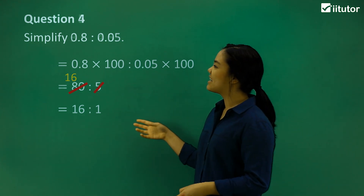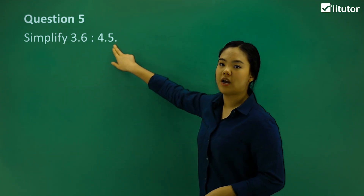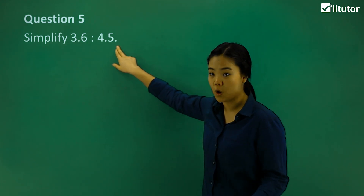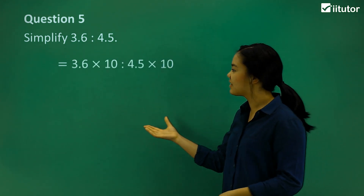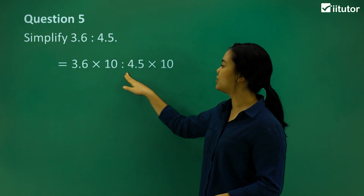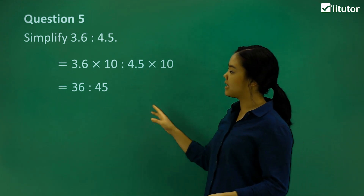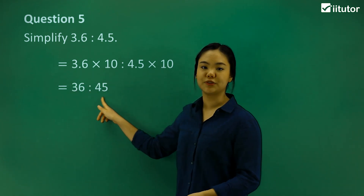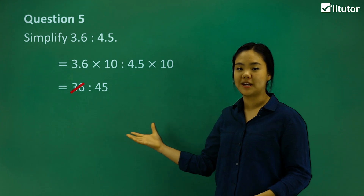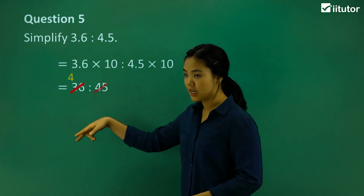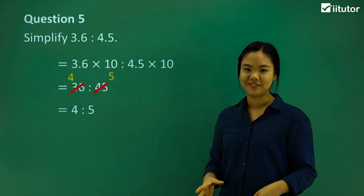Let's try question 5 — simplify 3.6 to 4.5. Again, it's a decimal and we want to make it whole, so we multiply by 10. 3.6 times 10 to 4.5 times 10 gives us 36 to 45. What number are both divisible by? That's 9. 36 divided by 9 is 4, and 45 divided by 9 is 5. So the simplified ratio is 4 to 5.